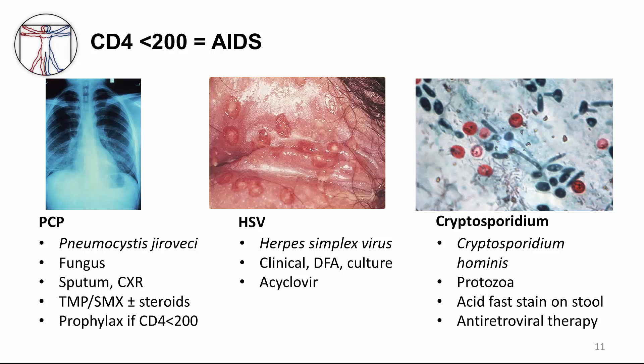PCP pneumonia is caused by the fungus Pneumocystis jirovecii. It is the AIDS-defining illness for many patients who are unaware of their HIV status. We typically diagnose PCP in a patient who has a subacute presentation of a dry cough with hypoxia. Diagnosis is made with a chest x-ray showing diffuse infiltrates and induced sputum with a silver stain showing cysts. The AP chest x-ray on the left reveals bilateral pulmonary interstitial infiltrates. Reactivated HSV is also common in patients with CD4 count less than 200.